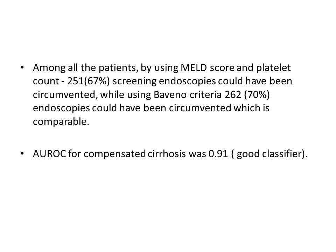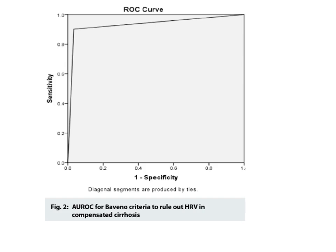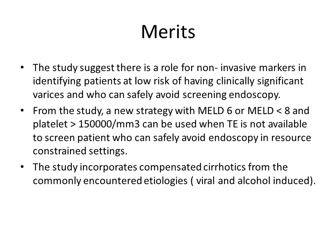The AUROC for compensated cirrhosis was 0.91, indicating this classifier system is good. AUC ranges from 0 to 1 — a value approaching 100% indicates an excellent predictive model. The table also shows how Bavino 6 criteria perform across compensated chronic liver disease patients of various etiologies, with a consistently high negative predictive value irrespective of etiology. This is also illustrated by the ROC curve using Bavino 6 criteria to rule out high-risk varices in compensated cirrhosis patients.